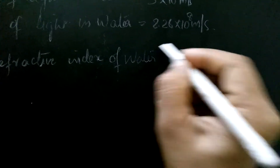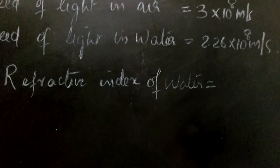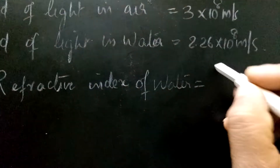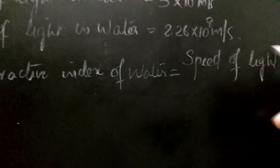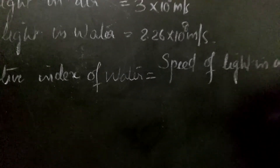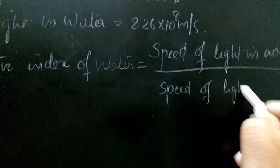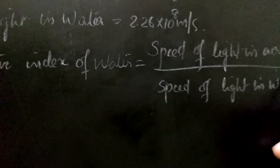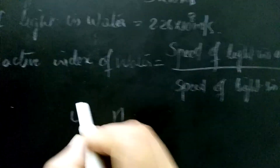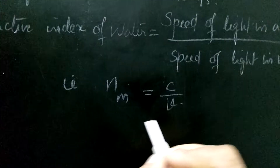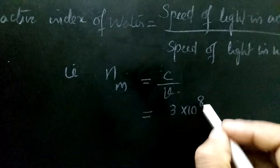Here we are finding the absolute refractive index because the first medium is air and the second medium is water. So the formula is: refractive index equals speed of light in air divided by speed of light in water.